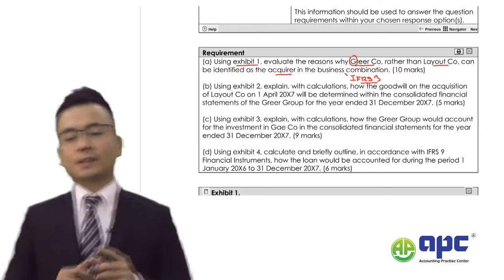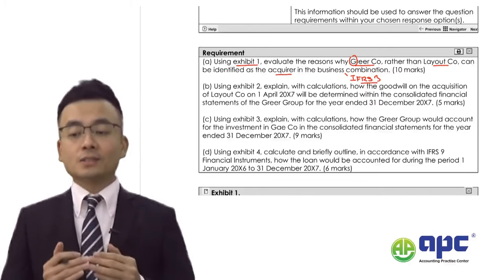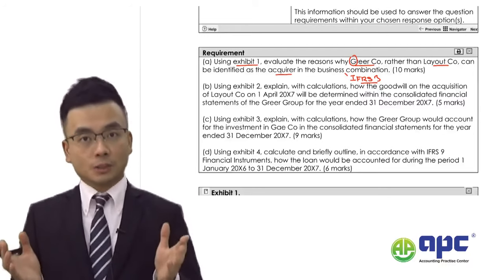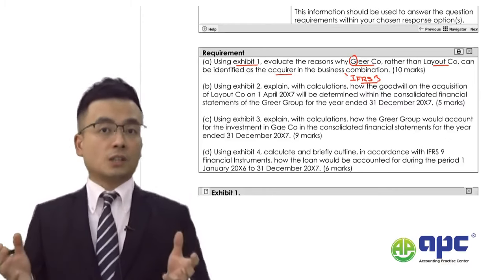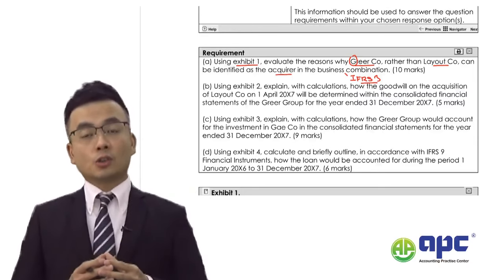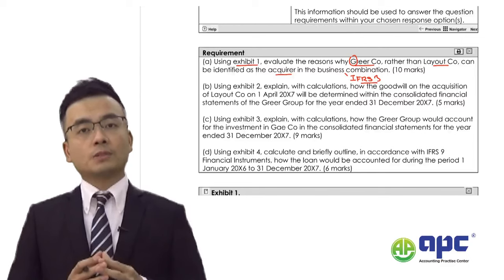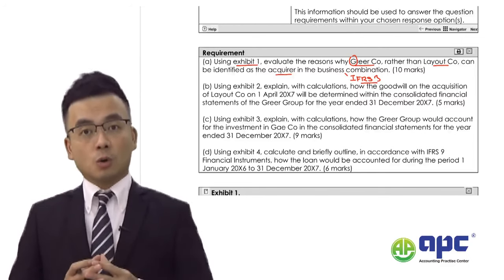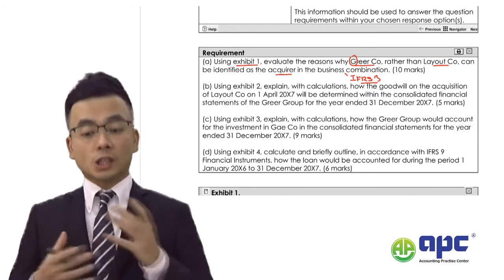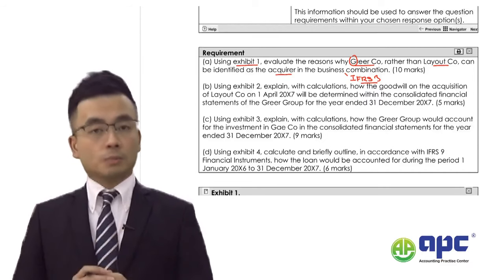Under IFRS 3, the acquirer will usually be the larger entity. For example, G-Complete must be larger than L-Complete to a certain extent. We can also bring in IFRS 10, the Consolidated Financial Statements concept, on how to determine control. In other words, the parent should be the acquirer. If we confirm that G-Complete is the parent, then G-Complete would be the acquirer.